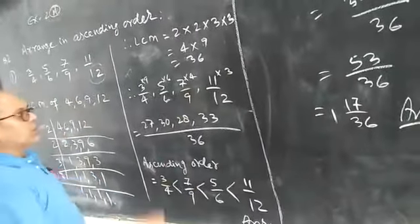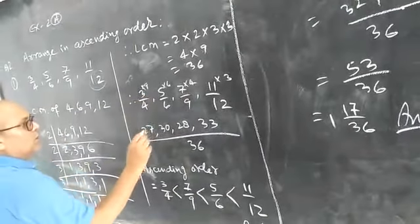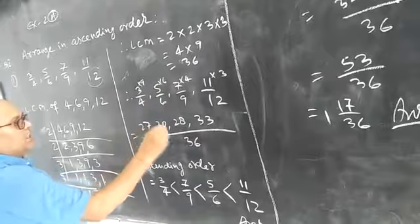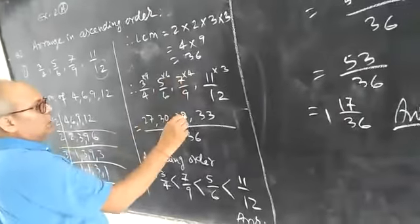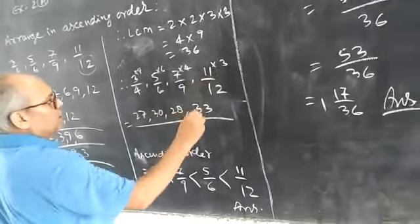11 into 3. We have 3 times 9 is 27, 5 times 6 is 30, 7 times 4 is 28, 11 times 3 is 33.